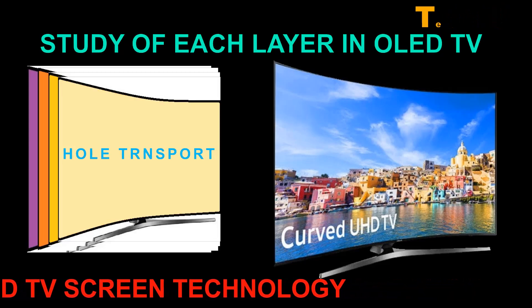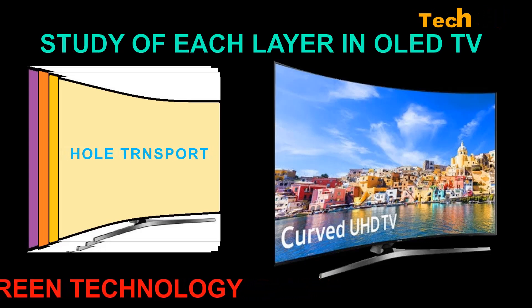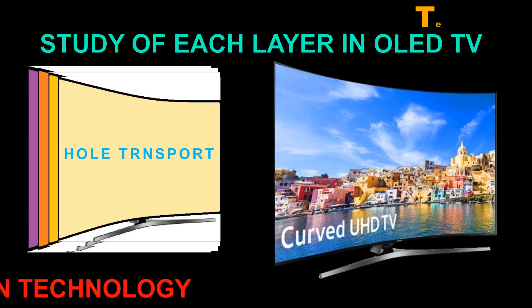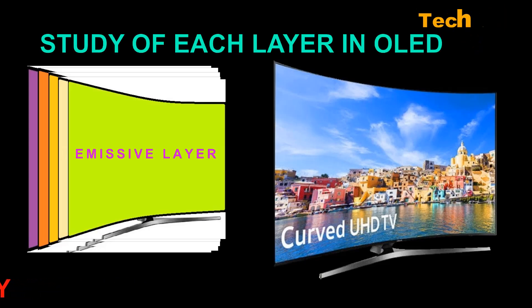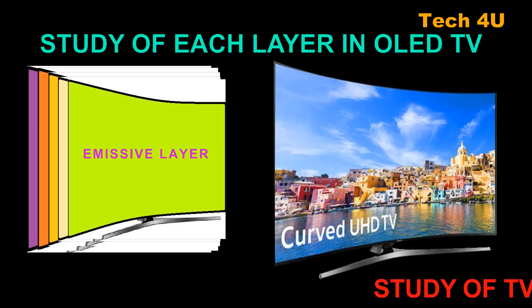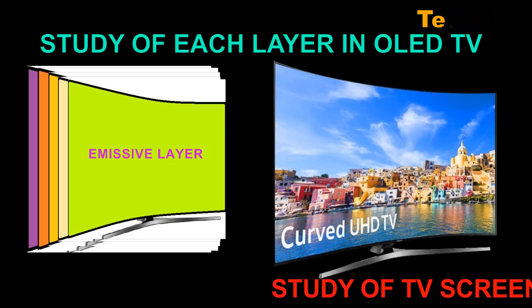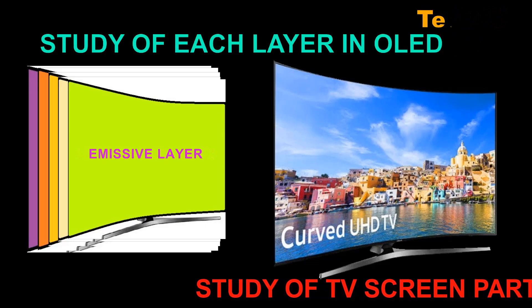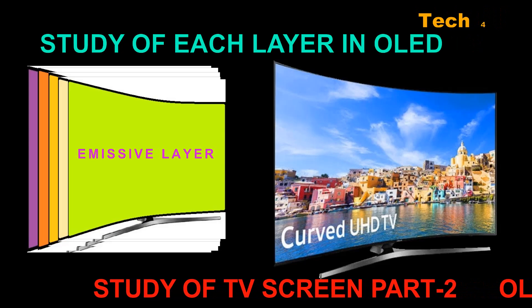The fourth one is the hole transport layer, or HTL. The HTL supports the transport of holes across it so they can reach the emissive layer. The fifth one is the emissive layer — the heart of the device and where light is made. It consists of a color-defining emitter doped into a host, and this is the layer where electrical energy is directly converted into light.